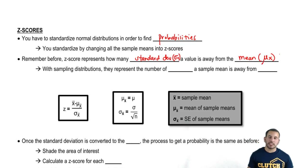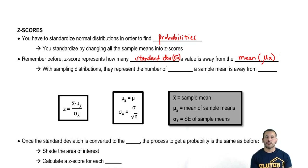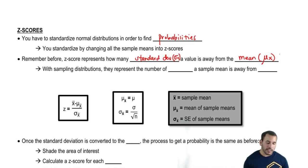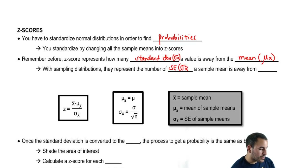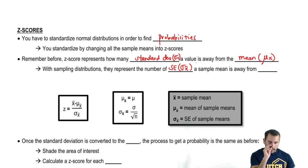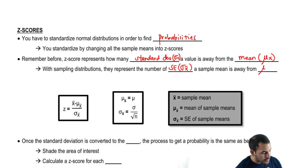With a sampling distribution, z-scores still represent a measure of spread — they're telling you how far away something is from the midpoint. But in this case, it's the number of standard errors, sigma x-bar, that a sample mean is away from the mean of the sample means.